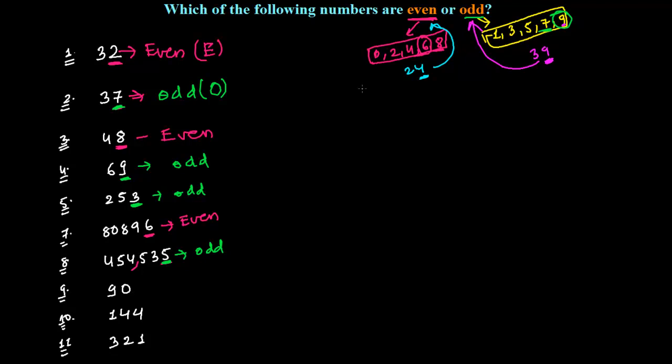Now 90. Zero comes in the group of even numbers. Here is the 0. Not only 90. You can say any number having 0 at the end, like 100, like 1100, 4500. Whatever you choose. All the numbers that end with 0 are even numbers.